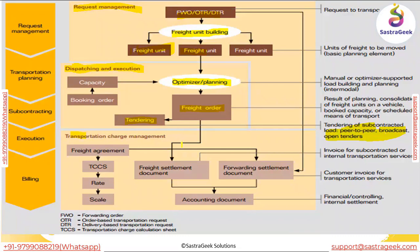Next we reach transportation charge management — TCM. A freight order will have a TCM tab, a charge calculation tab. It is the combination of your rate table, scales, and calculation sheet, which determines the rate in the freight order. It specifies what rate you want to pay for the freight and what charges will be incurred.